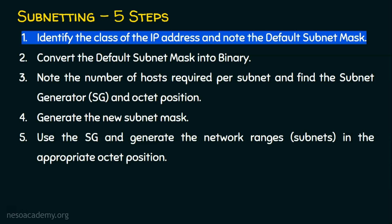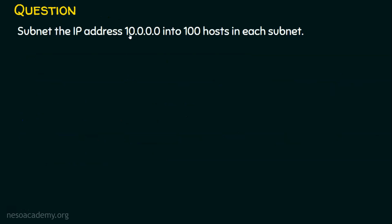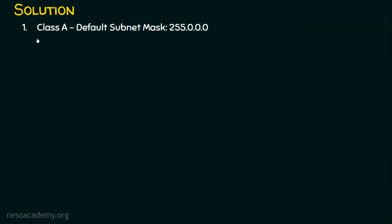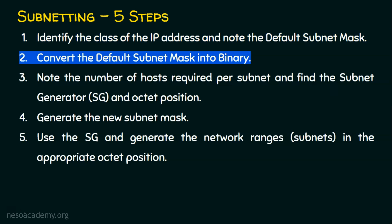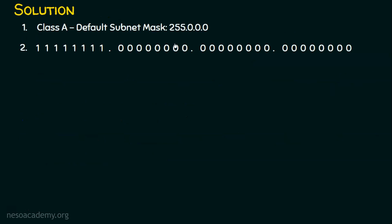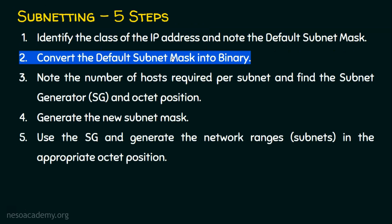Step number one: identify the class of the IP address and note the default subnet mask. The address 10.0.0.0 is a class A IP address, and the default subnet mask is 255.0.0.0. Step one is complete. Step number two: convert the default subnet mask into binary. The result has all ones in the first octet and zeros in the remaining three octets.